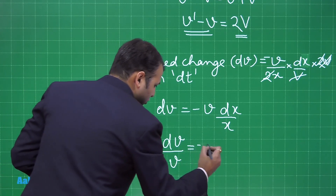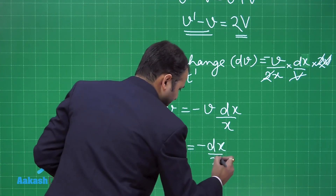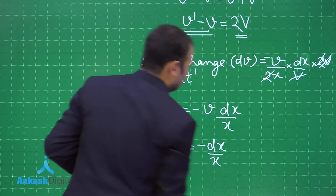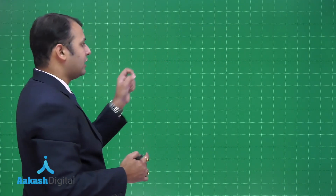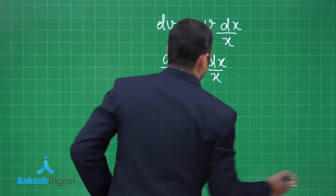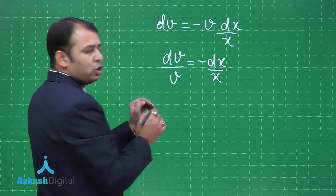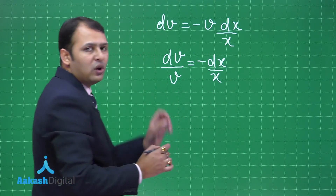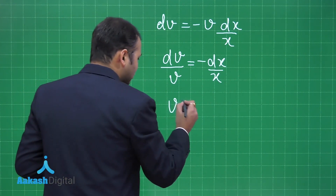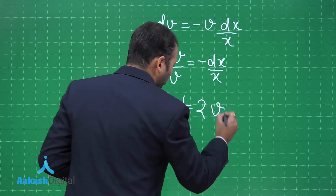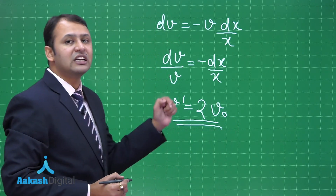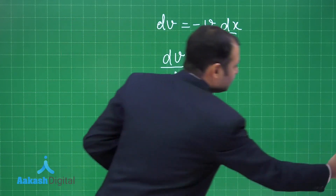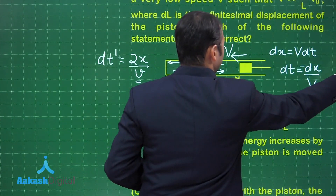Integrating dv/v = −dx/x from V₀ to current velocity v, and the distance from L₀ to L₀/2 as per the question, you get v′ = 2V₀. This means the particle velocity doubles when the piston moves from L₀ to L₀/2.